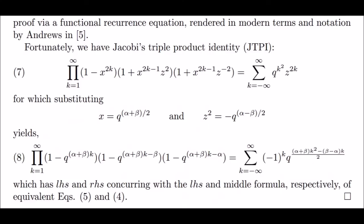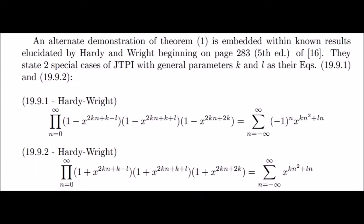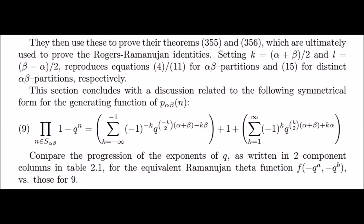Fortunately, we have Jacobi's triple product identity, which is kind of like a Swiss army knife. We can narrow that down to two special cases covered by Hardy and Wright in their book. And narrowing down further, we find our generalization embedded within.